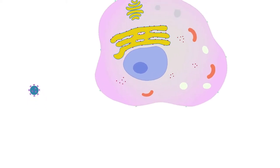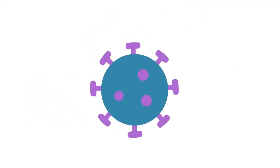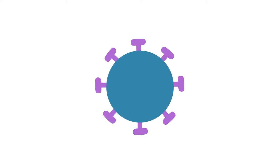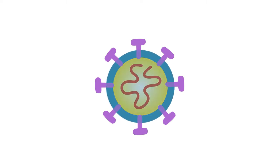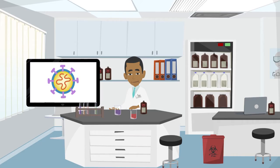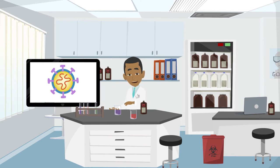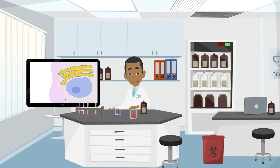Coronavirus is thousands of times smaller than our cells. The virus is made up of a protective coat, instructions on how to copy itself, and spikes to help it invade the cells of the body. Coronavirus is so simple that it cannot multiply itself — it needs to enter a human cell in order to do that.